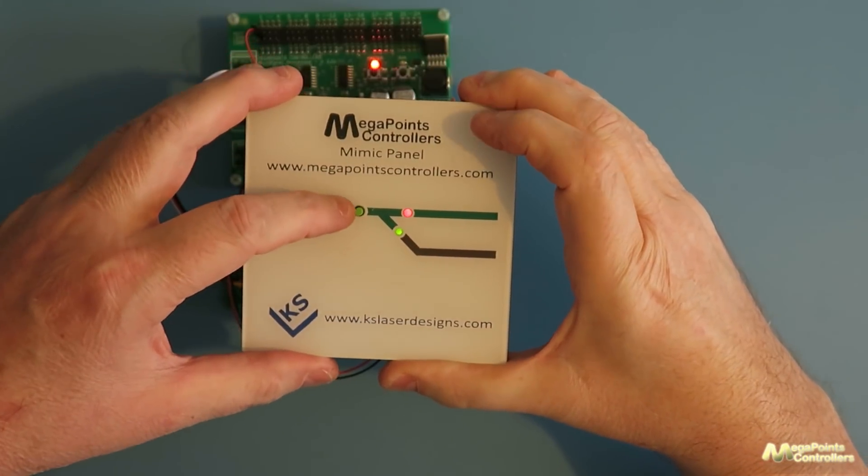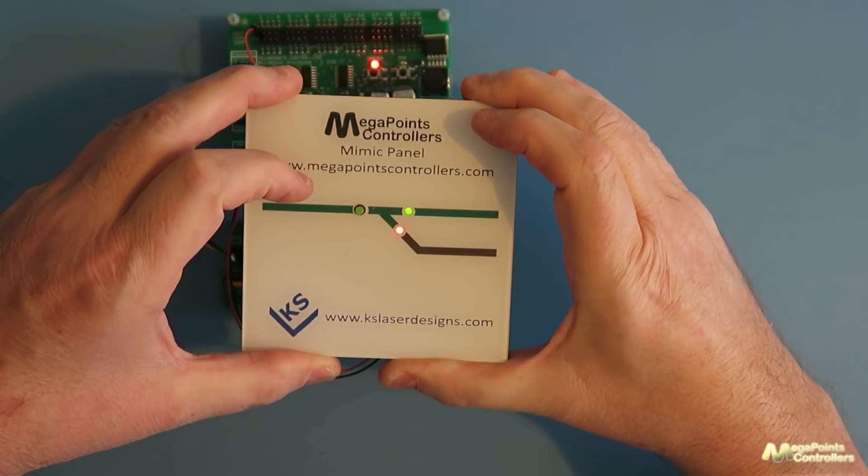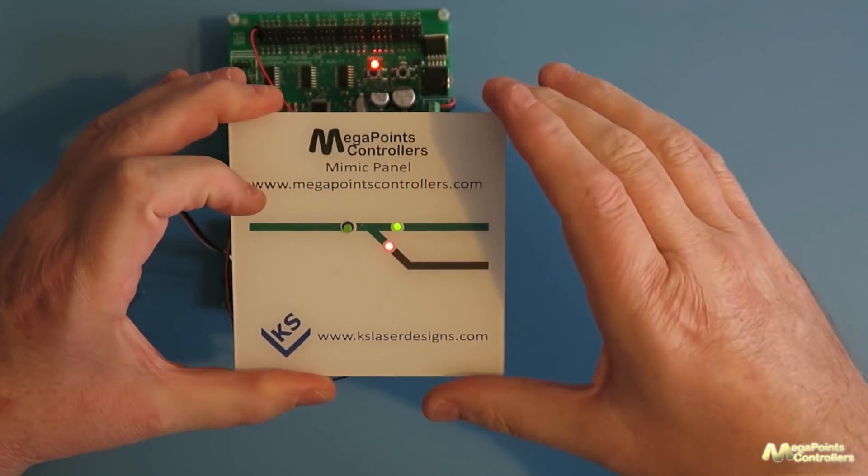So as I press the button we have the red on the top the green on the bottom and now they're flashing and I now have the green on the top and the red on the bottom which I hope is obvious which way the stock would run.